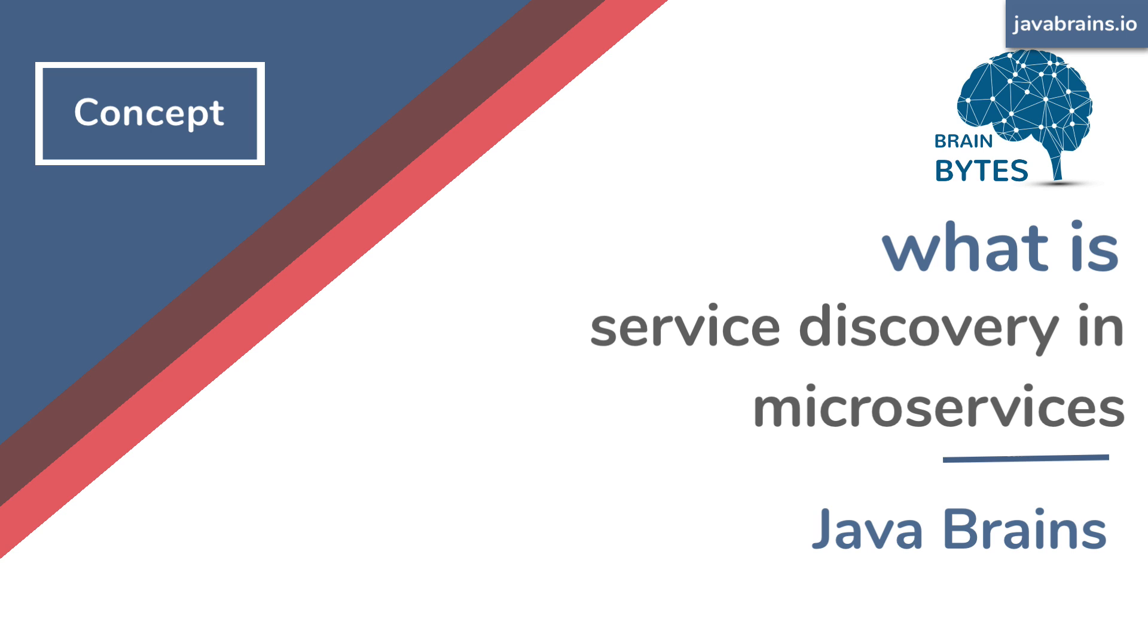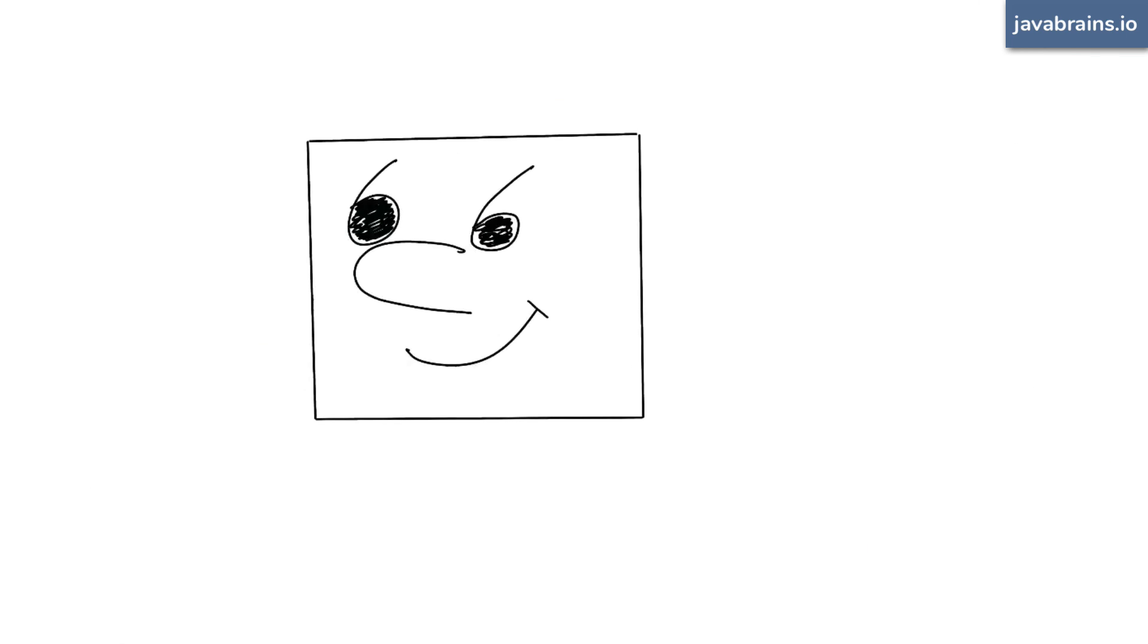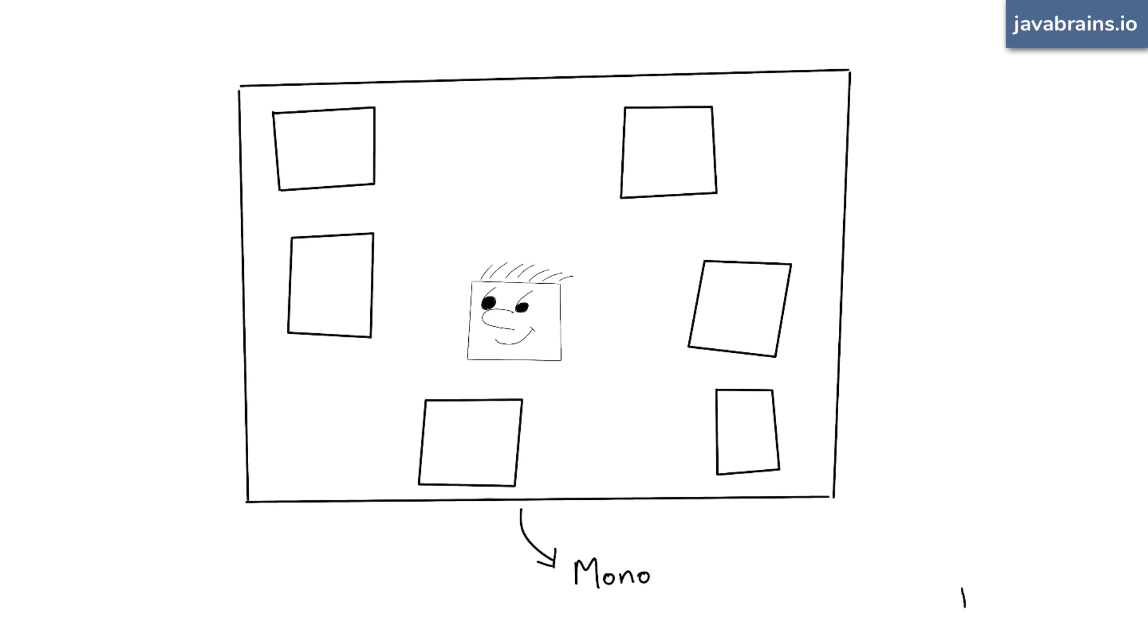Once upon a time there lived a little class in a Java code base. It had a few friends, other classes in the same code base. In fact, since this was a monolithic code base, the little class had a lot of friends. Life was good.